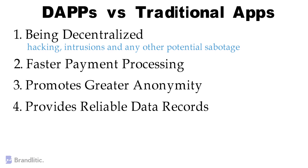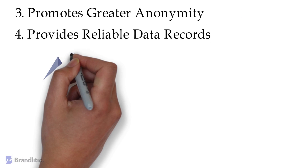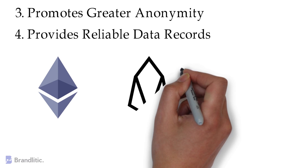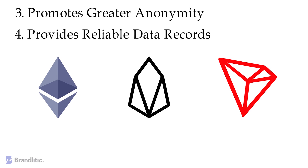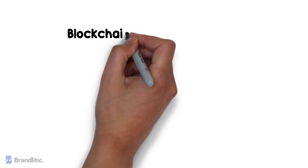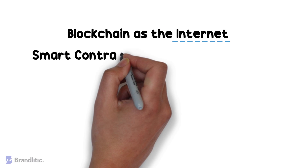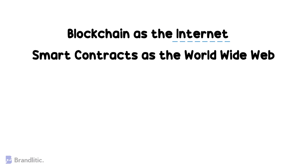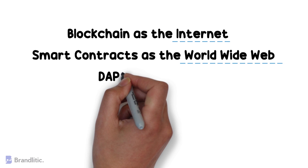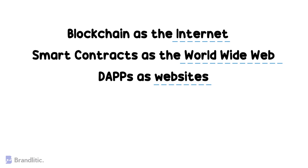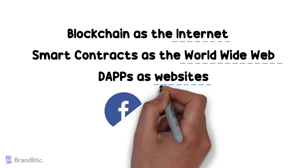If you are interested in building a decentralized app, the most popular blockchain platforms for doing so today are Ethereum, EOS, and Tron. For ease of understanding, you can think of blockchain as the internet, smart contracts as the world wide web, and decentralized applications as websites like YouTube or Facebook.